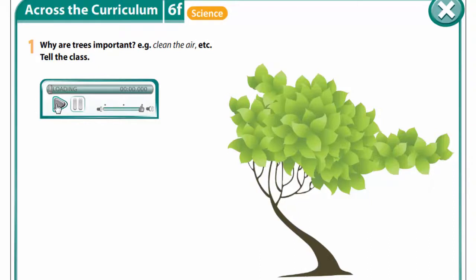Now let's listen to the model. Trees absorb carbon dioxide and emit oxygen, so they are good for the atmosphere. Trees are home to many birds and other animals. Trees provide nutrients and drainage for the soil and stop floods from washing it away.